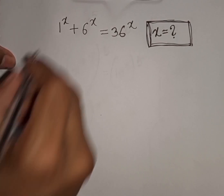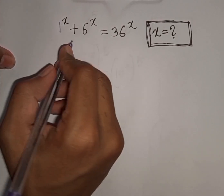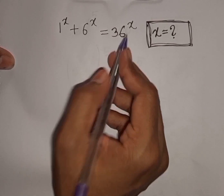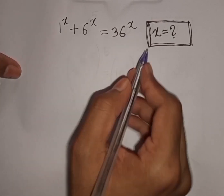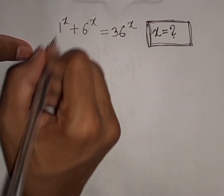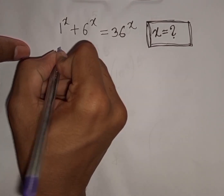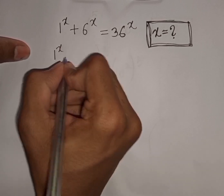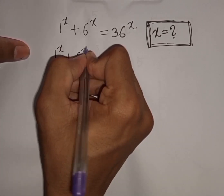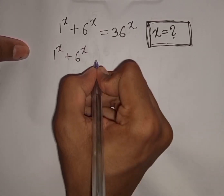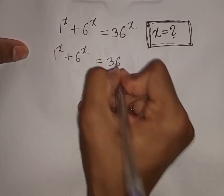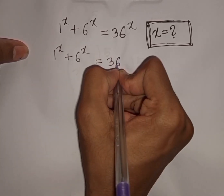How to solve 1 power x plus 6 power x is equal to 36 power x. Find the value of x. We have 1 power x plus 6 power x is equal to 36 power x.